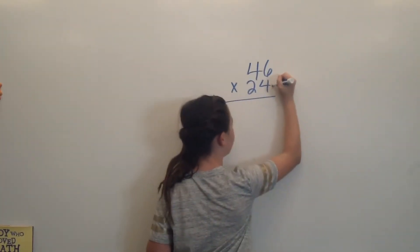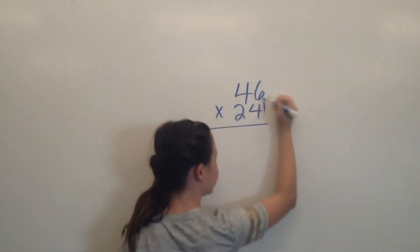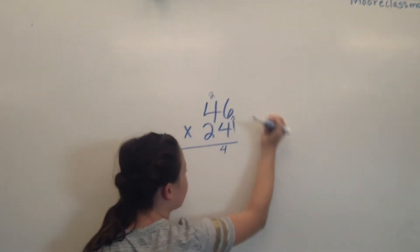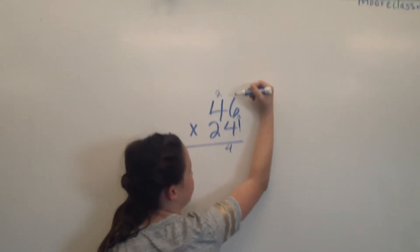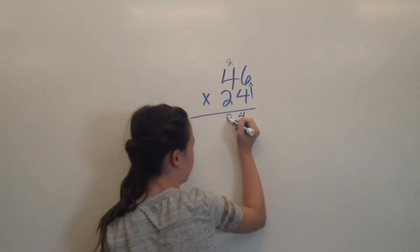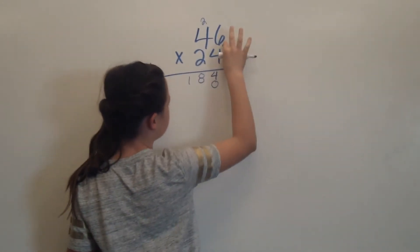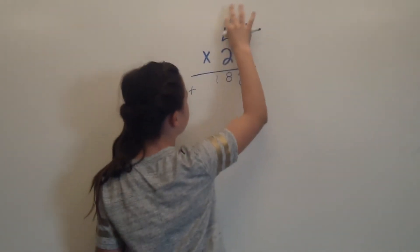First, you do 4 times 6, which is 24, carrying your tip. Then, 4 times 4 is 16, plus 2 is 18. You put 18 in there. Then you're going to add a 0, because we're moving into the tenth place. Then you can erase all the adjectives.